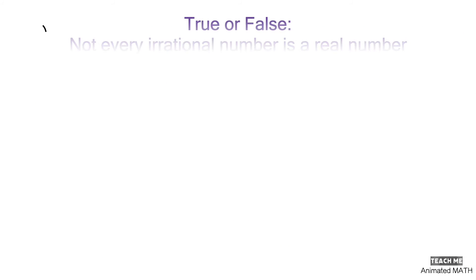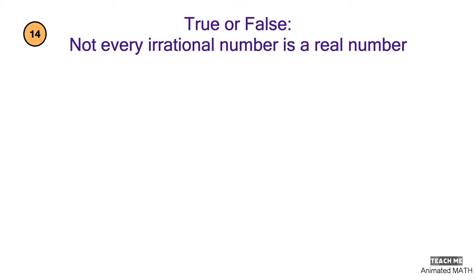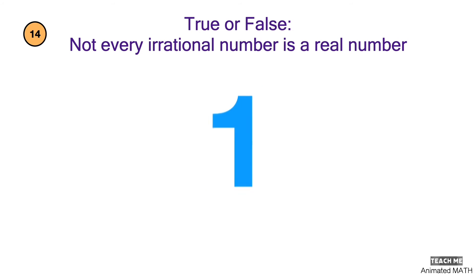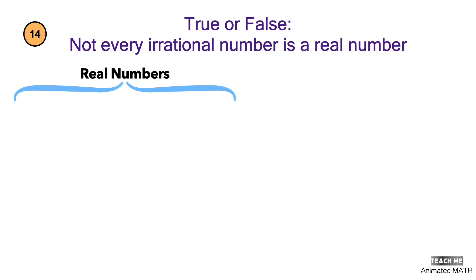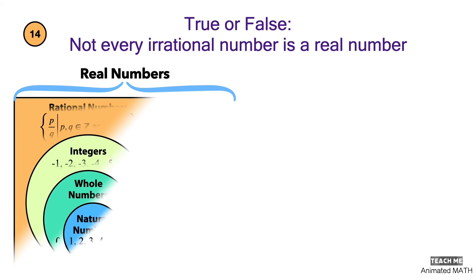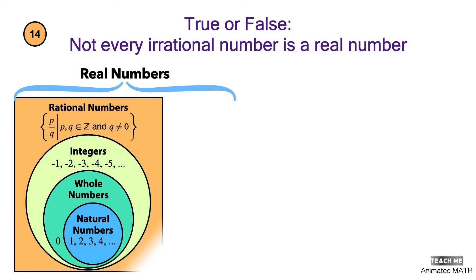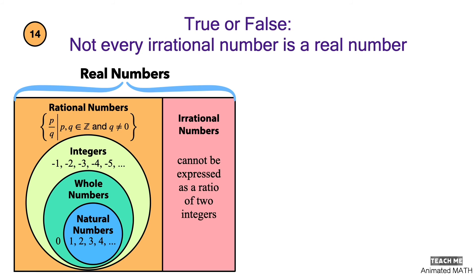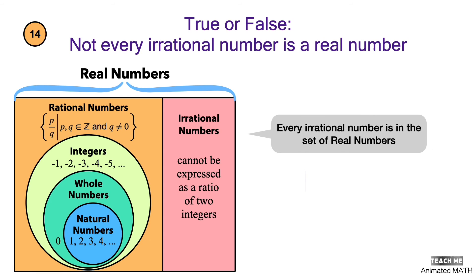True or false: not every irrational number is a real number. The set of real numbers includes the set of rational numbers plus the set of irrational numbers. Every irrational number is included in the set of real numbers, so the answer is false.